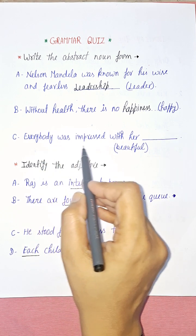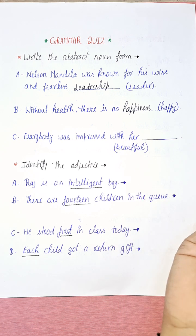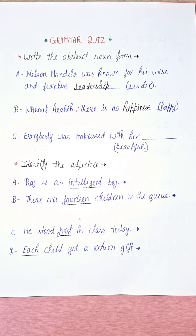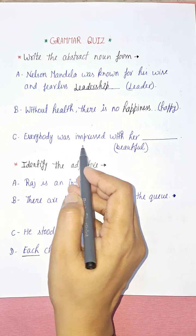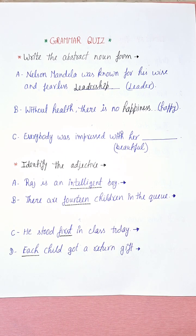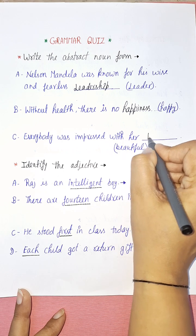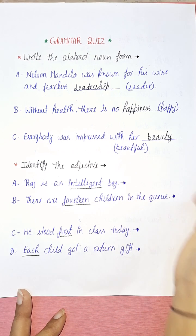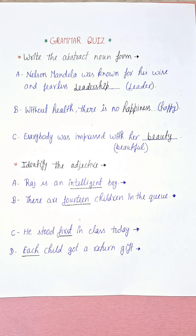The third one is: everybody was impressed with her beautiful. 'Beautiful' is an adjective — it is a thing which you can see. To make it an abstract noun, 'beautiful' will convert into 'beauty': everybody was impressed with her beauty. Beauty is an abstract noun — you feel it, you experience it, but you can't touch it. Abstract noun is a non-physical thing, something conceptual that you can't perceive directly with your senses.